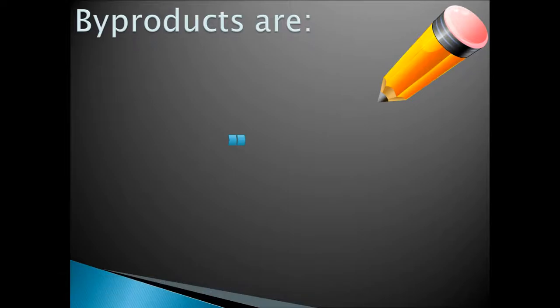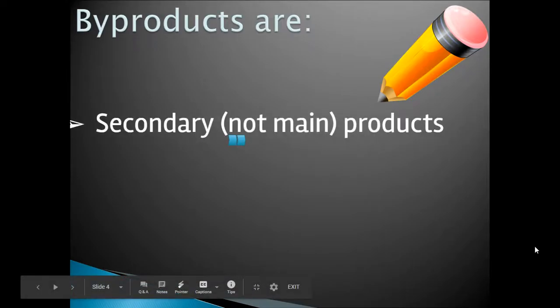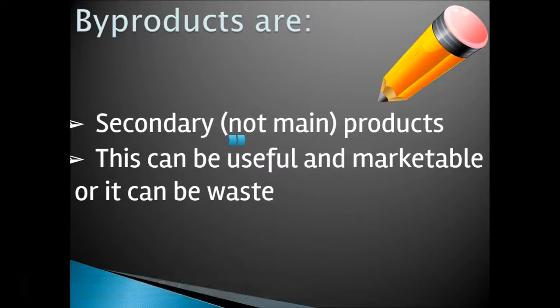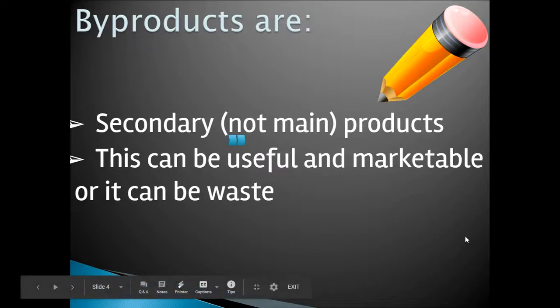Byproducts are the secondary, or not main, product. It could be something useful and marketable, or it could be something that is waste. In the example of cattle, we wouldn't kill them for their leather as the main reason. However, once they have been slaughtered for their meat, we can then get the secondary product, or byproduct.